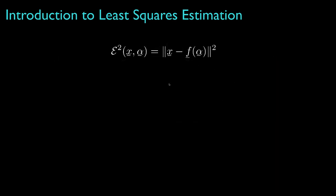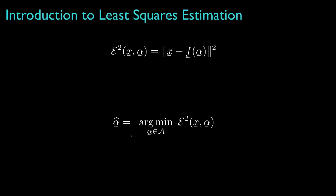Now one way to do this is to determine the parameter vector alpha that minimizes the squared error between the observation x and the predicted value for x that is computed by applying the observation function f to the parameter alpha. That is, we search over all possible parameters and select the one that makes the squared error the smallest between the observation it predicts and the actual observation. Mathematically, alpha hat, our estimate, is the argument that minimizes the squared error subject to any constraints that the parameter space might impose on the parameter.